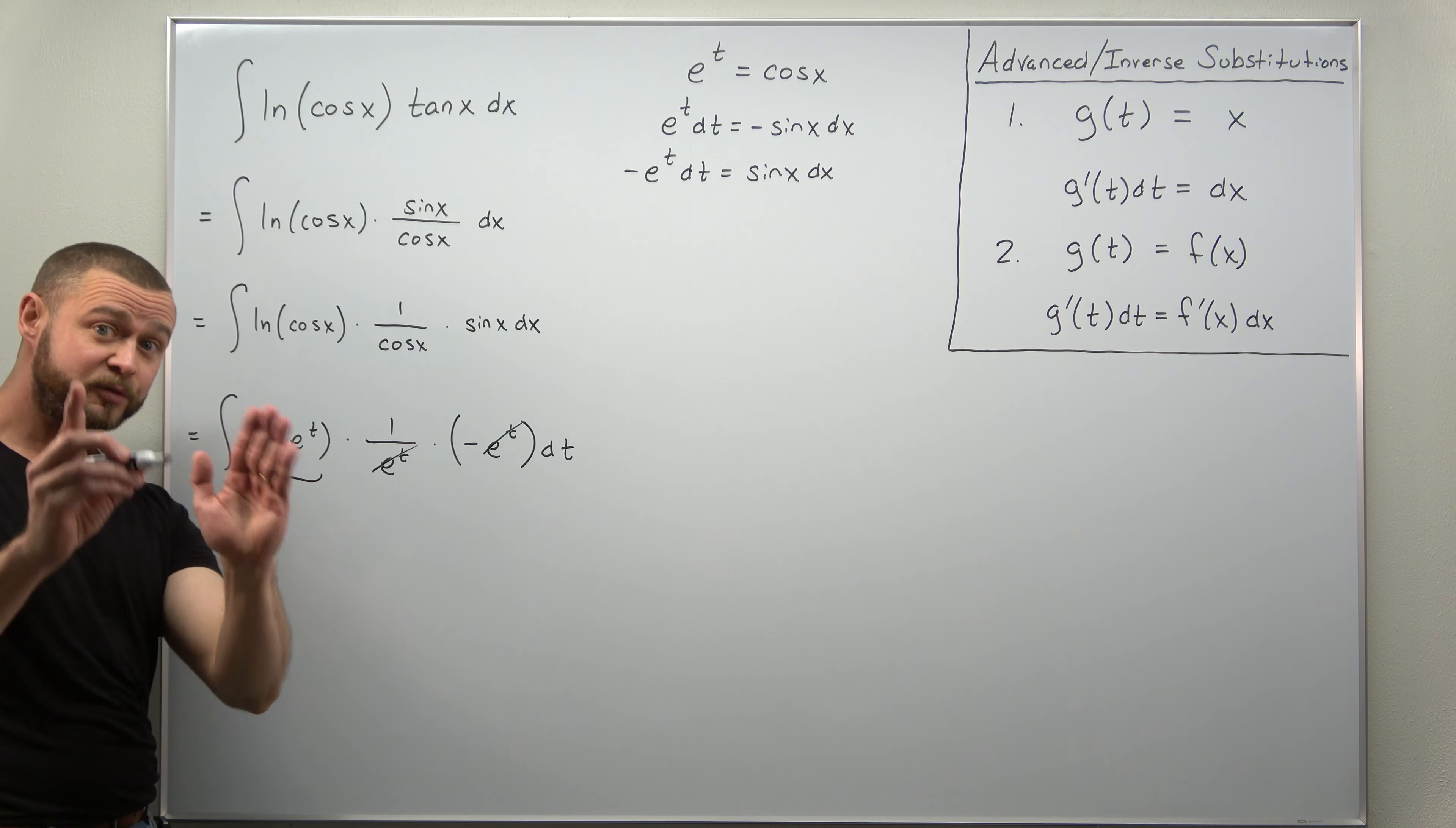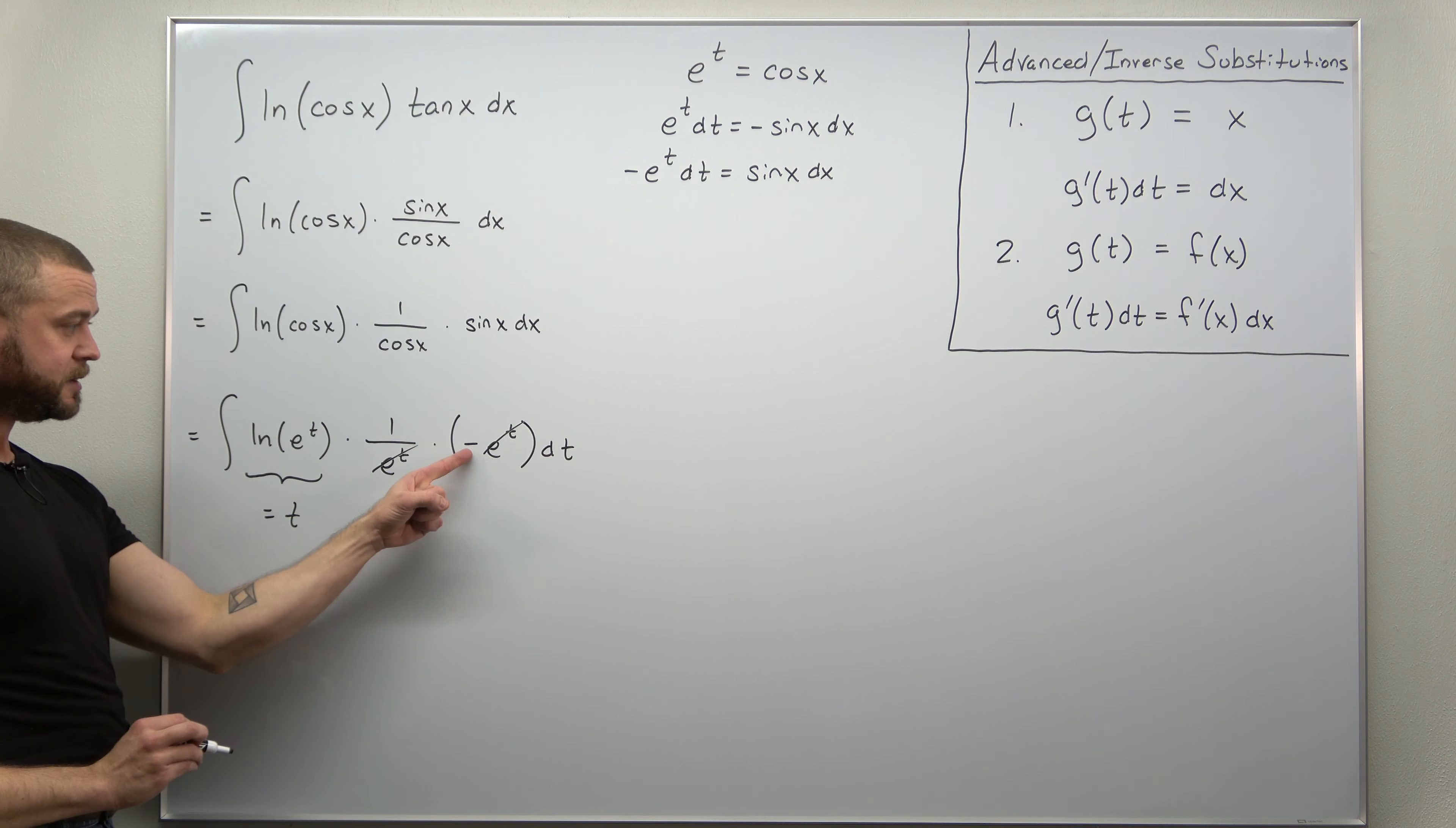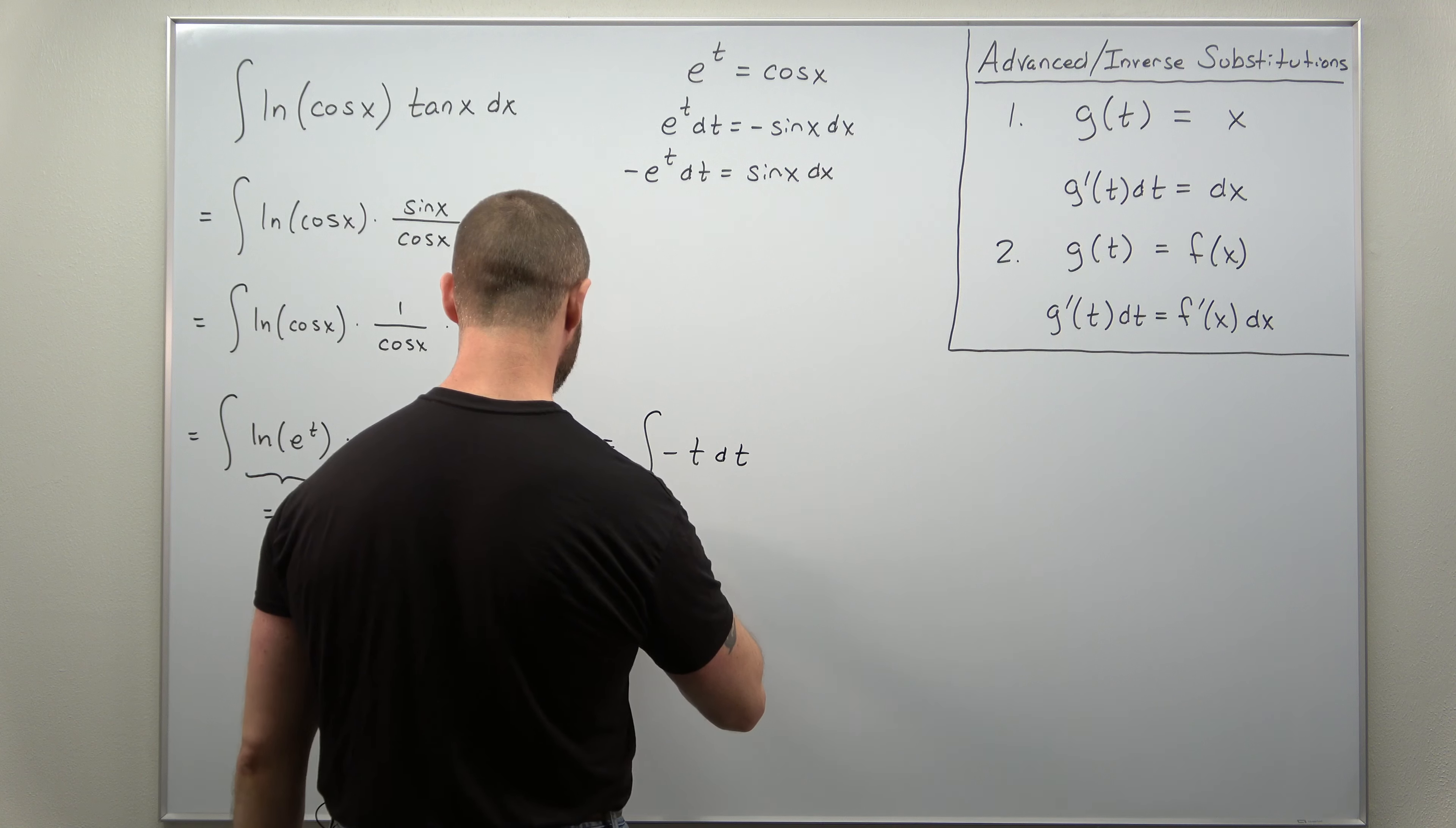That's going to cancel. That was the whole reason we made this substitution. Natural log of e to the t cancels to t and we have a very simple integral: negative t dt, and that we can integrate with the power rule. Just go ahead and integrate that.